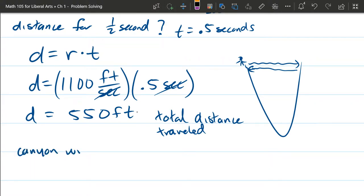And you want half of that distance. So the canyon width is going to be distance over 2, which is 550.